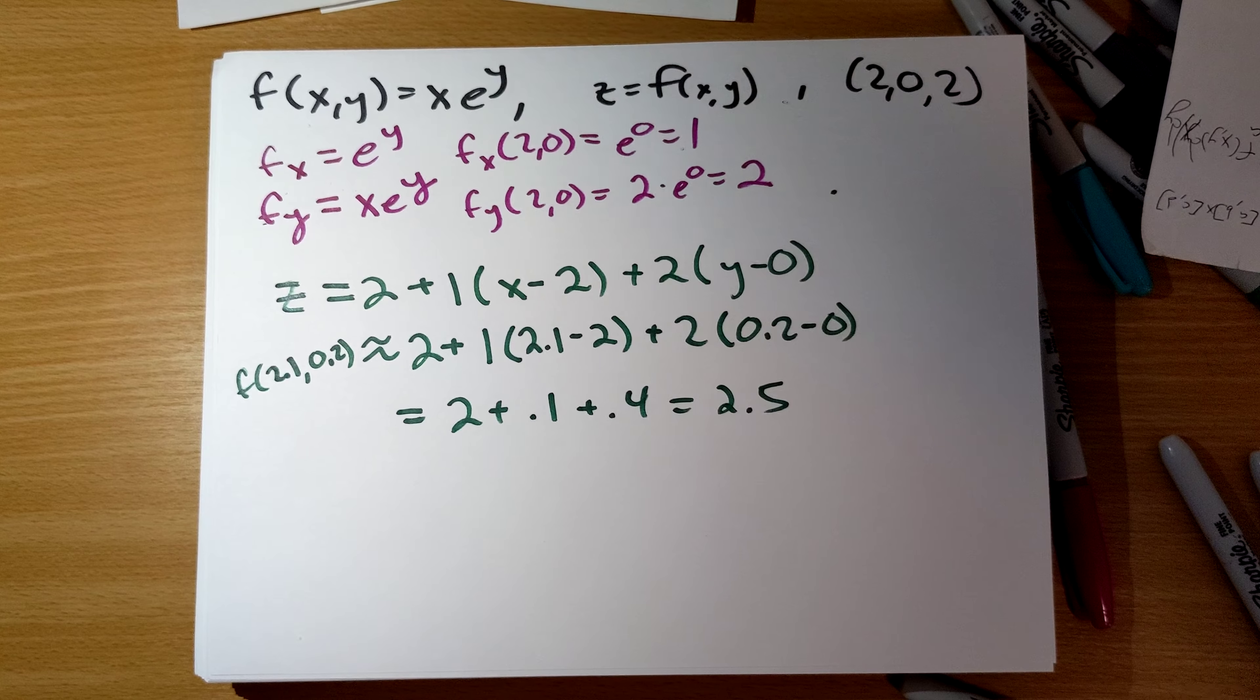So, this is 2 plus 0.1 plus 0.4 is 2.5. So, you can check that with a calculator and see how good our approximation is.